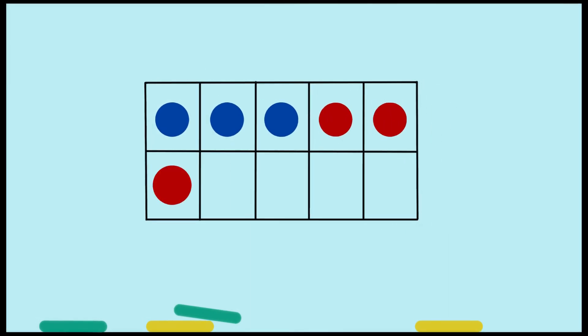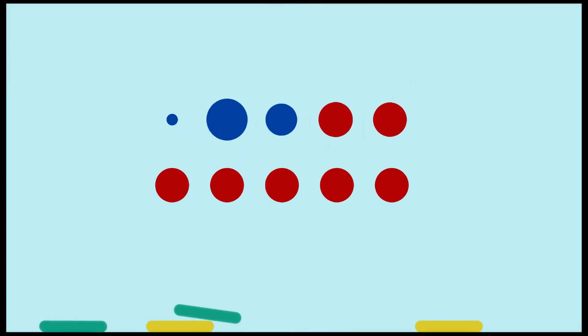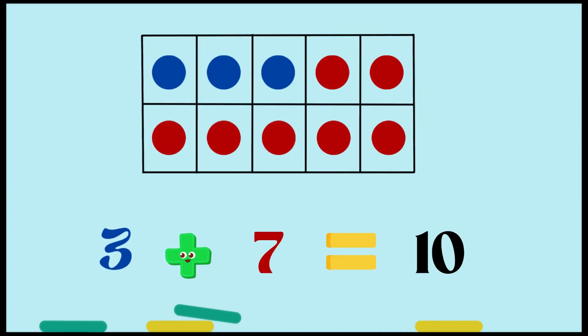All righty, next one — three blue dots and seven red dots. This number sentence will be three plus seven equals 10. So now you guys know that three and seven make 10.